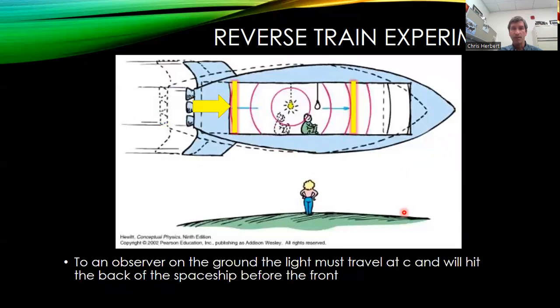However, for a person sitting on the ground, when the lightning flashed, it was at this position. As the rocket ship goes by, the light is now at this position. Now, take a look and see what happens here.